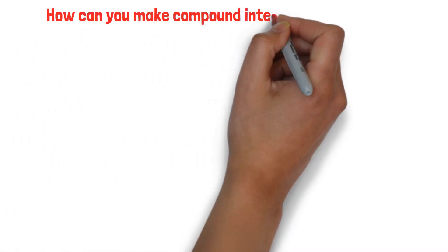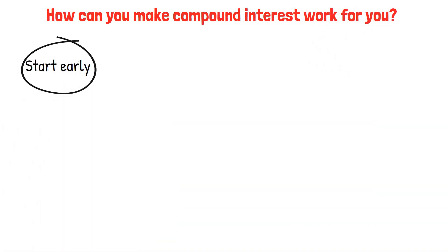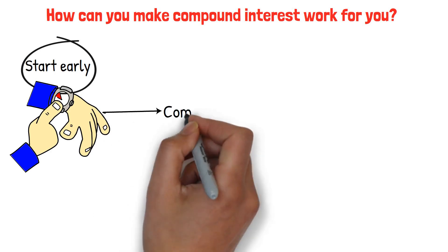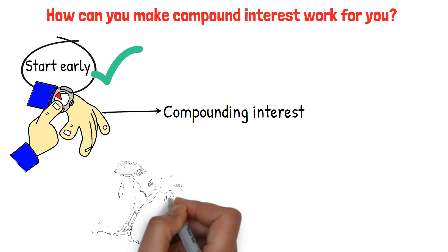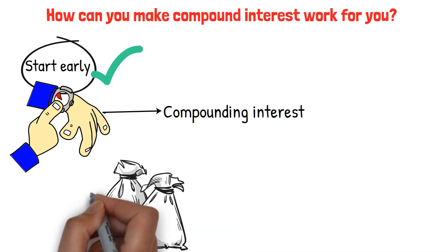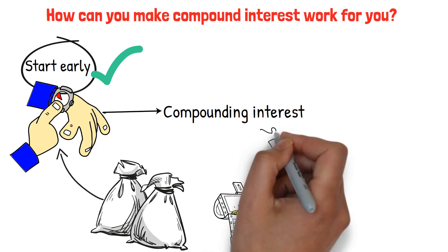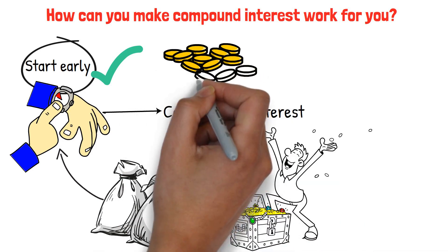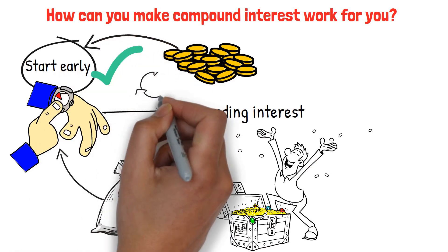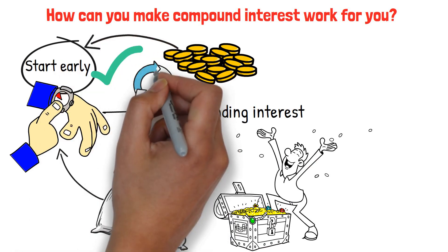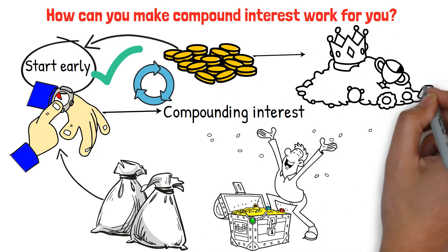How can you make compound interest work for you? Well, the first step is to start early. Time is your company in compounding interest. Starting early is one of the most important things you can do to make compound interest work. The more time your money has to grow and compound, the more significant the impact on your long-term wealth. Even if you can only afford a small amount of money to invest each month, beginning as soon as possible is very important. By starting early and continually reinvesting your earnings, you may take advantage of the power of compounding and create wealth over time.